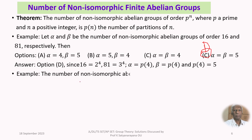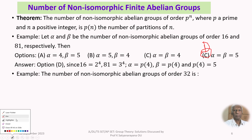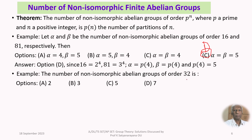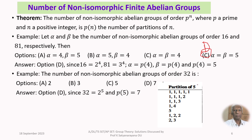Next example: the number of non-isomorphic abelian groups of order 32. Since 32 = 2⁵, the answer is P(5). The partitions of 5 give P(5) = 7. So there are 7 non-isomorphic abelian groups of order 32.